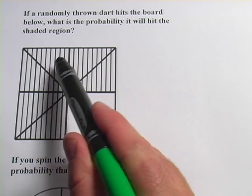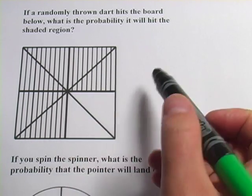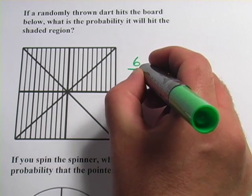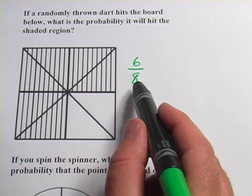And 6 of them, 1, 2, 3, 4, 5, 6, would be shaded. So that would be 6 out of 8. And then what you would want to do is reduce that.